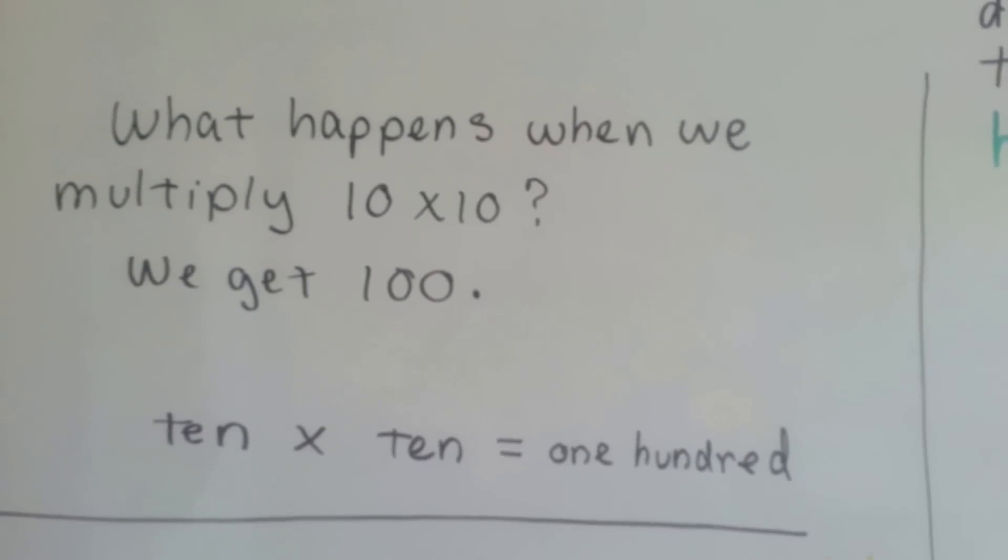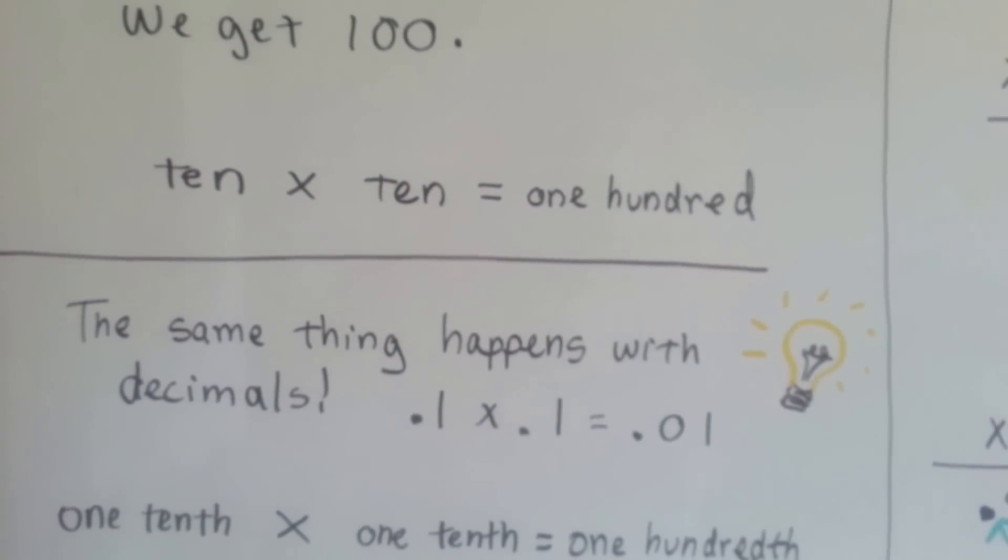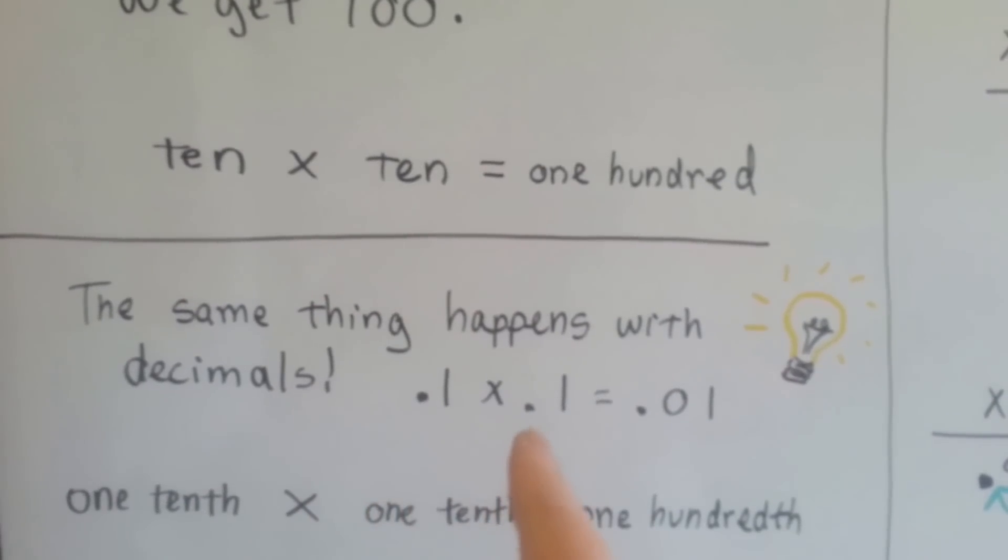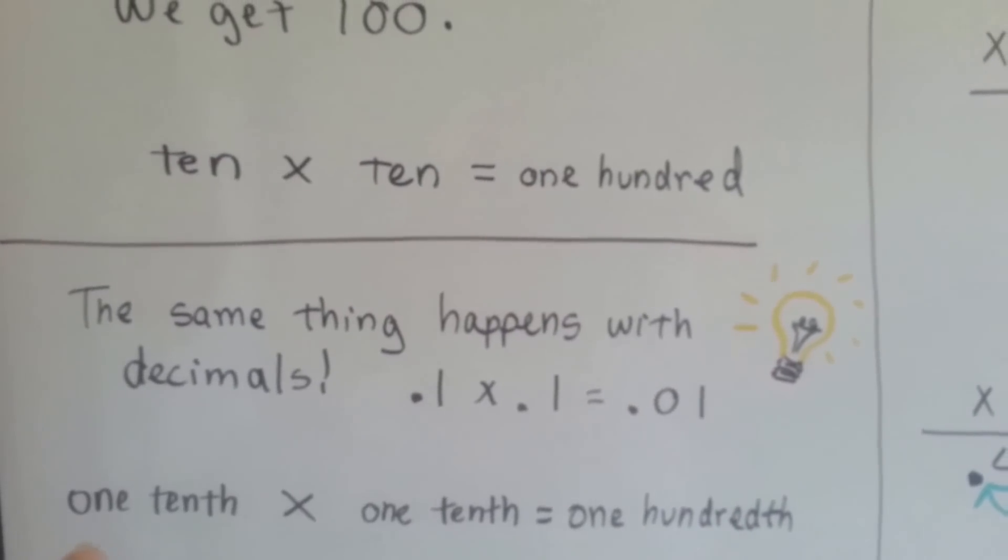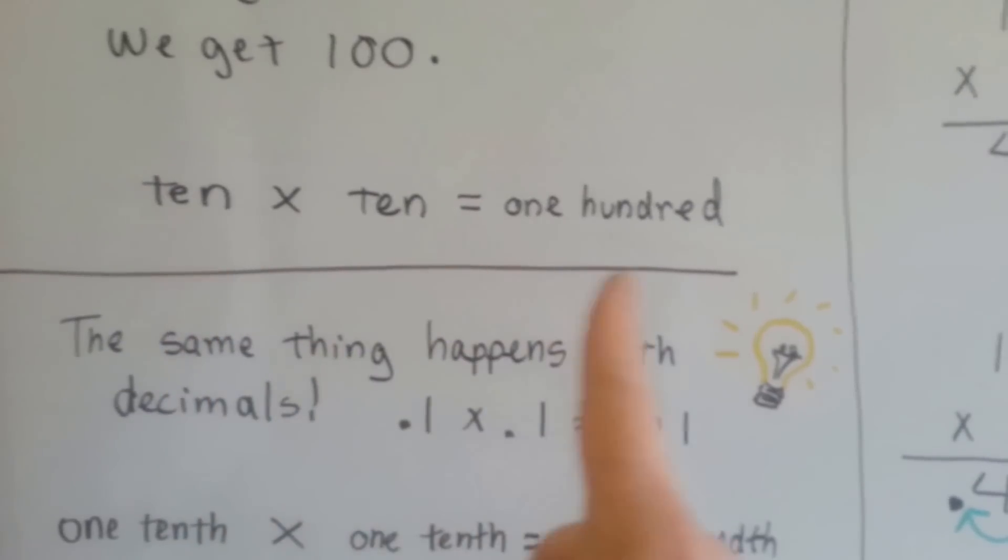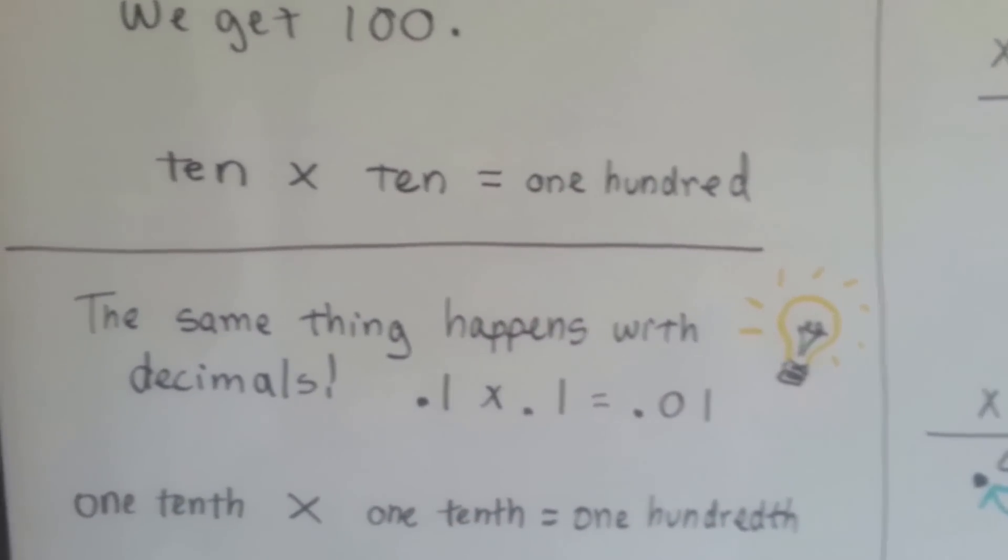Well, that's easy, right? Well, try the same thing with decimals, because the same thing happens. One-tenth times one-tenth equals one-hundredth. We're just putting TH at the end of the words. One-tenth times one-tenth equals one-hundredth. Just like 10 times 10 is 100, a tenth times a tenth is a hundredth. Isn't that something?